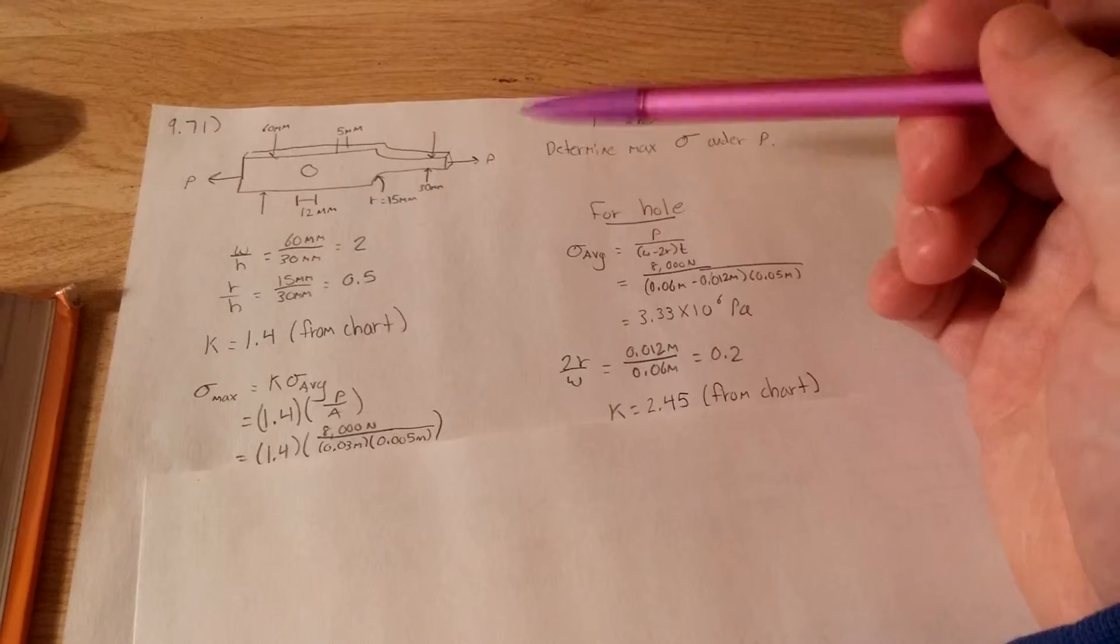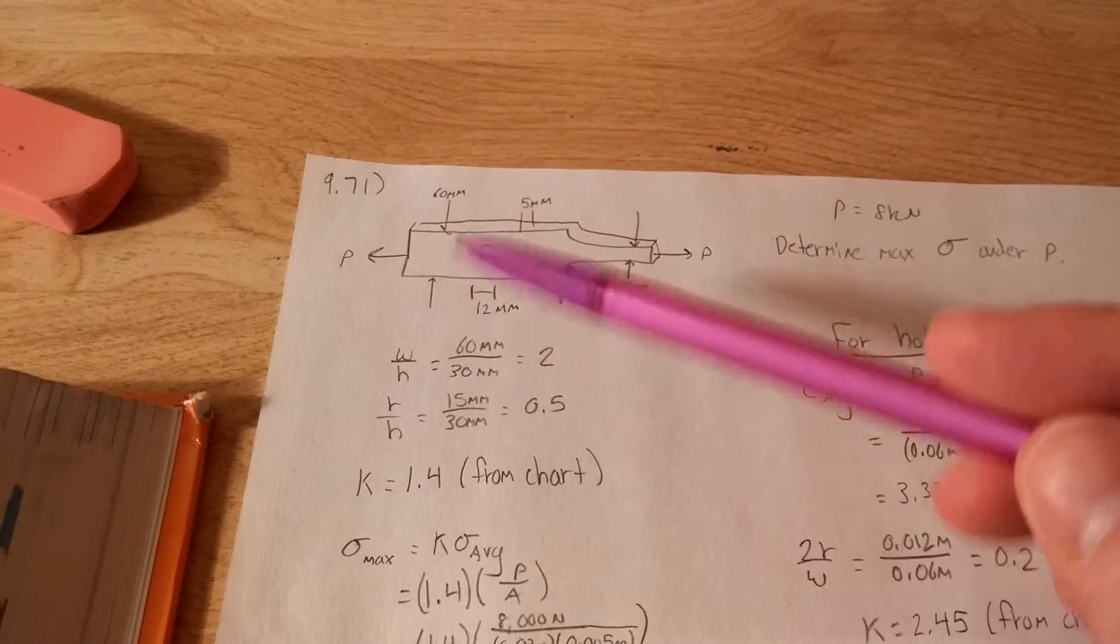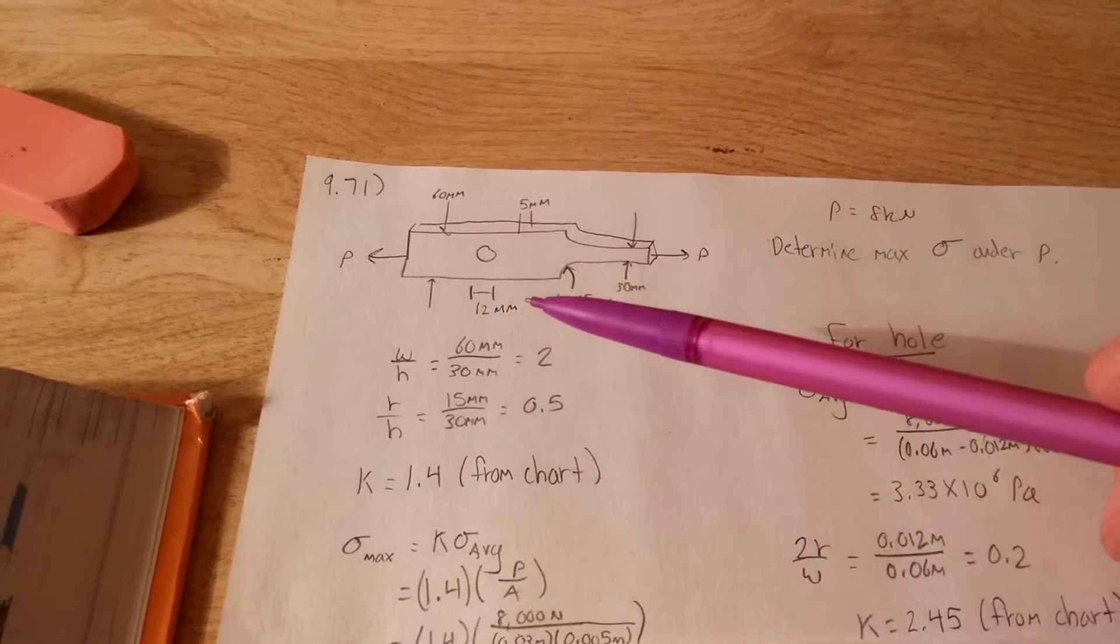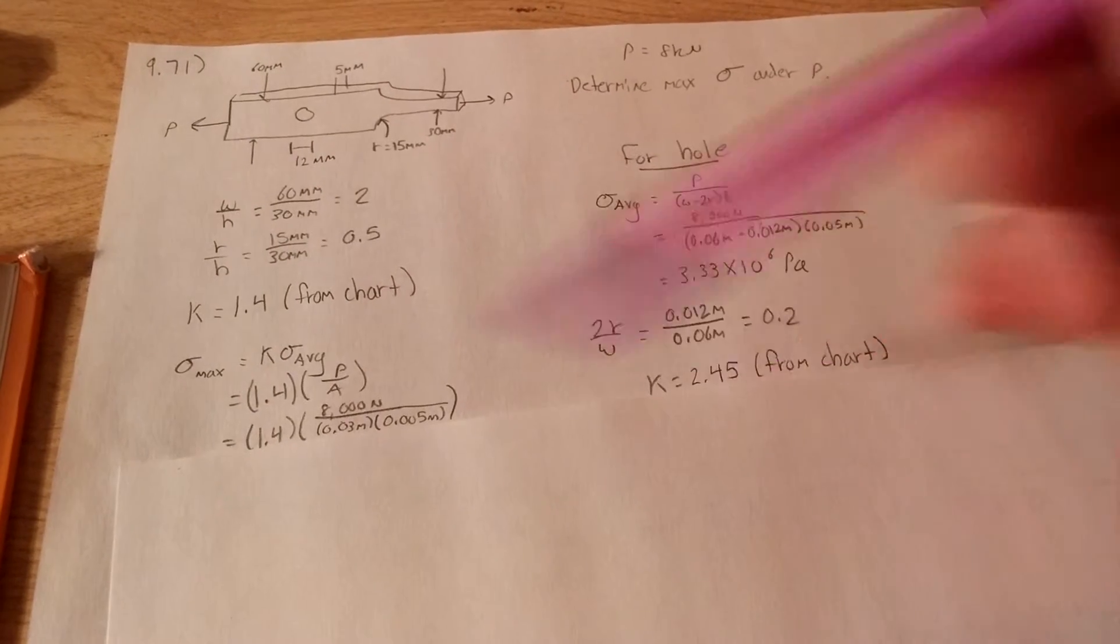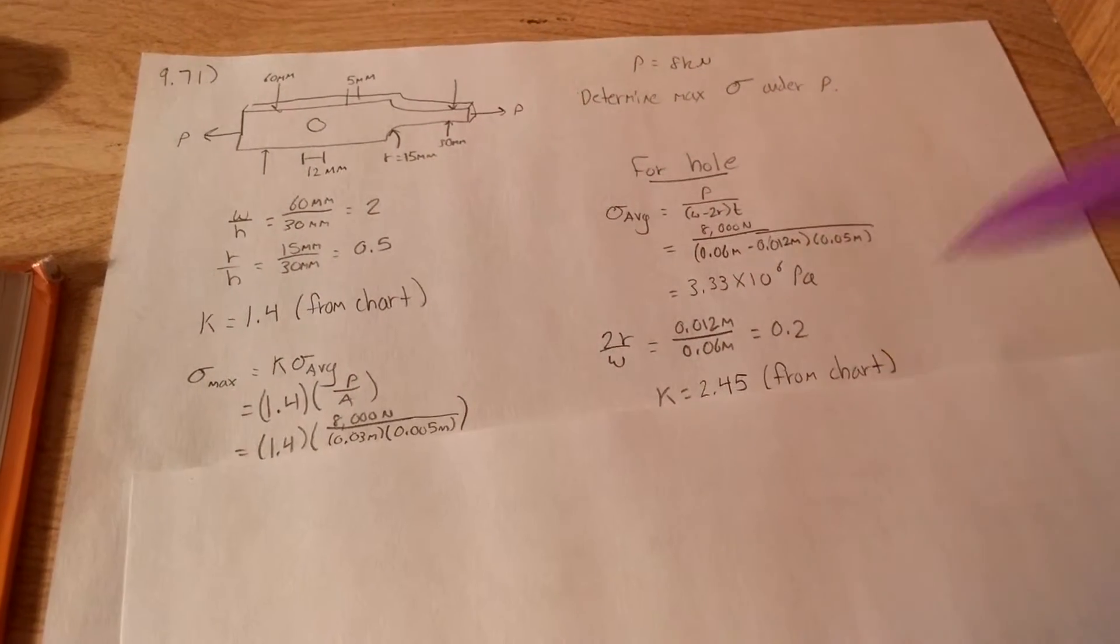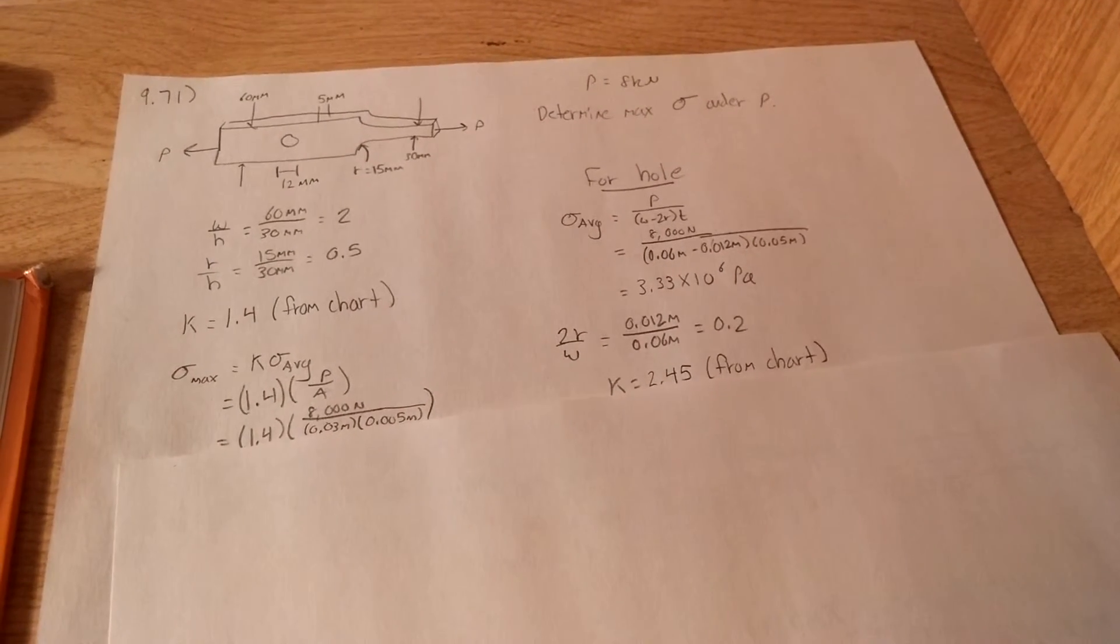So now we have to find 2R over W because there's another chart for if something has a hole. This is 2R, this is W again. So you're going to have 12 over 60. You end up getting 0.2. And once again, like we did over here, 2R over W for a hole of 0.2 corresponds to 2.45 of a K.